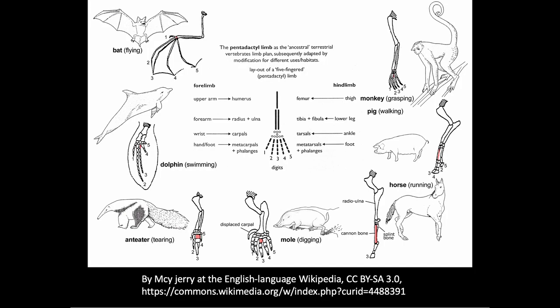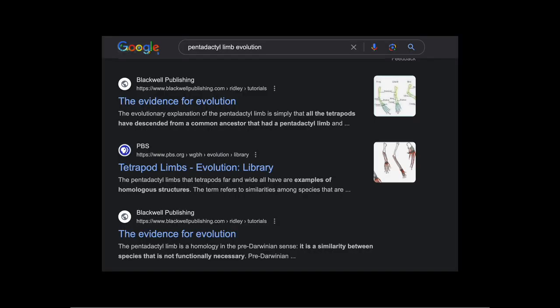This video covers false prediction number eight: the pentadactyl structure found in the limbs of so many animals. Five digits. If there ever was an icon of evolution, this is it. Over and over we're told the pentadactyl structure is powerful evidence, a virtual proof of evolution in textbooks, popular books, nature shows, blogs, videos, and on and on.